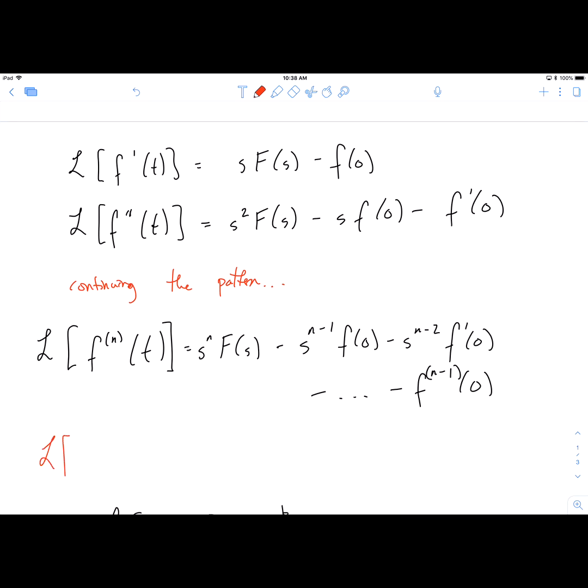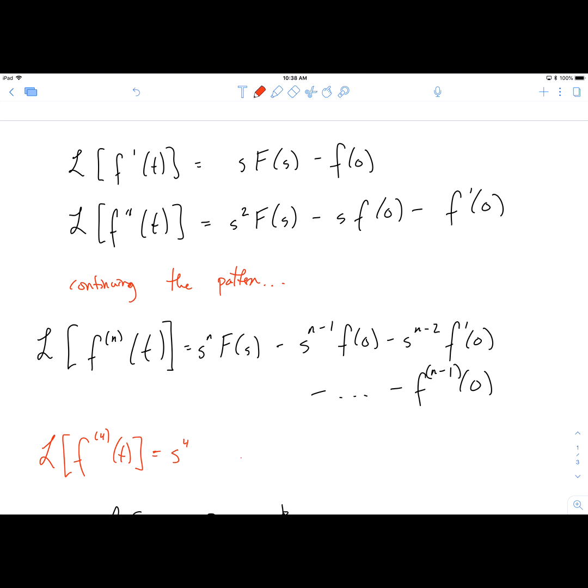For example, let's say I had the Laplace Transform of the fourth derivative. Notice the pattern: you start with s to whatever power you have, so we'll have s to the fourth. Then each term, the power on s drops a little bit. So the next one would be minus s to the third, then minus s squared, then minus s, and then the last one would not have an s on it.